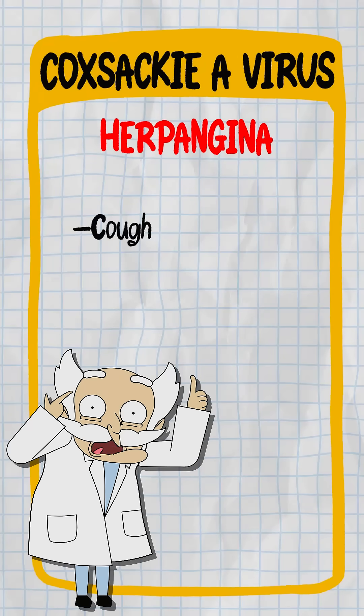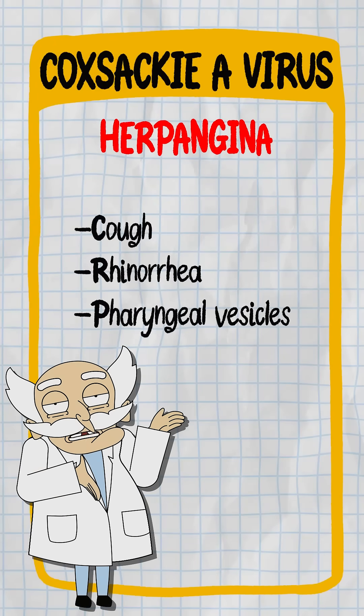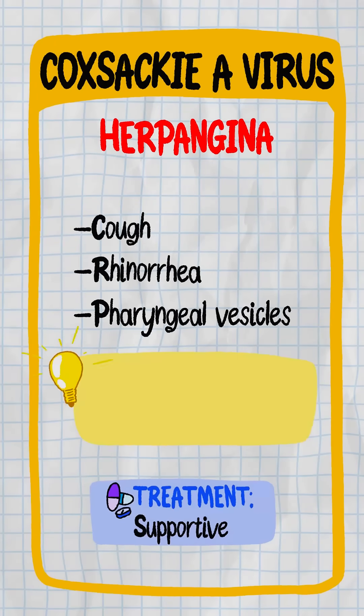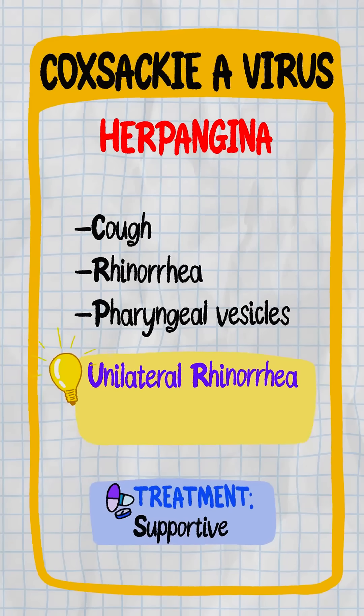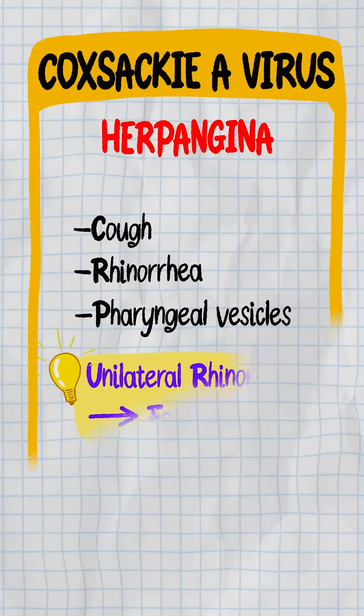Herpangina is also Coxsackie A, but here you'll see painful throat ulcers without the hand-foot rash. And remember, if a kid has unilateral rhinorrhea, rule out a nasal foreign body.